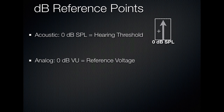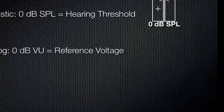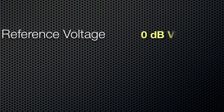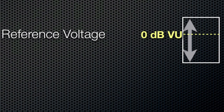In the analog domain, you're working with a reference voltage. There are several references — one common one is 0 dB equals 1 volt, and then we measure both up and down from there. So in the analog domain, you'll see some measurements plus above 0 dB and some minus below 0 dB.